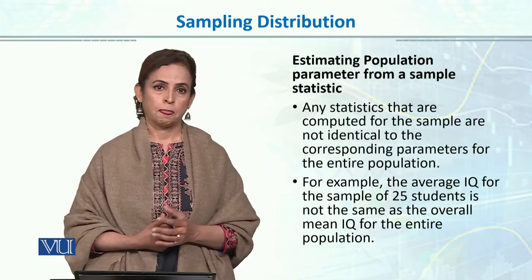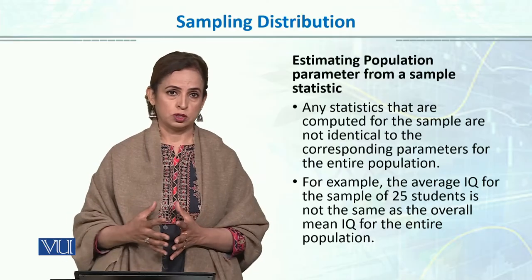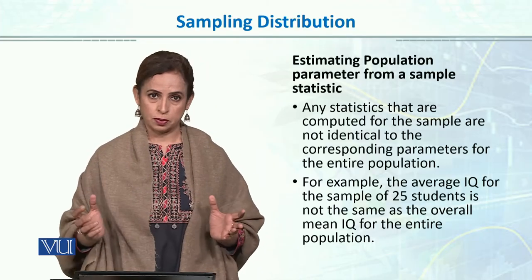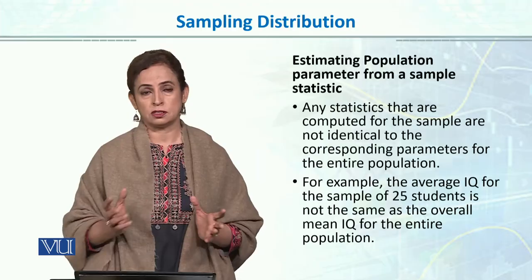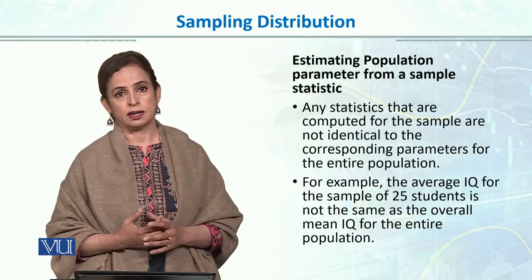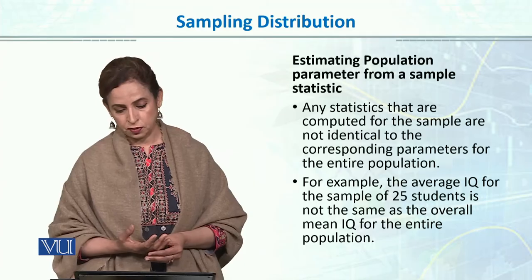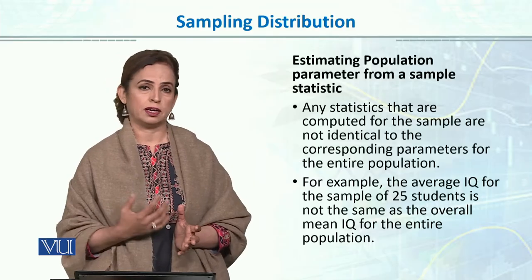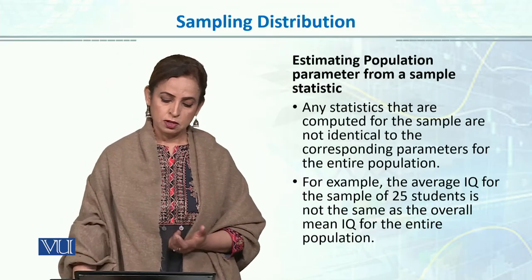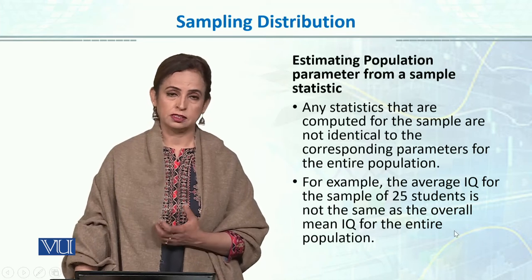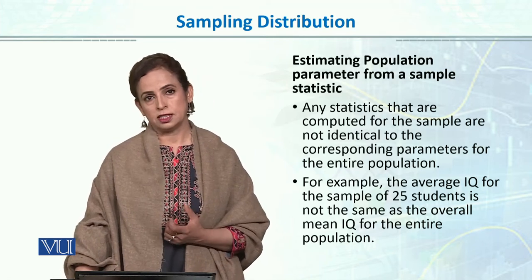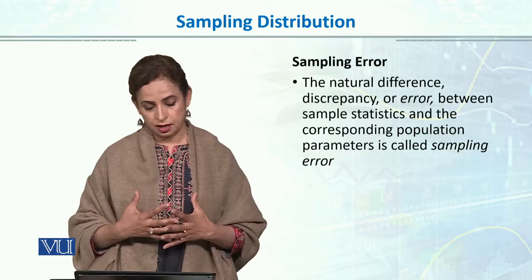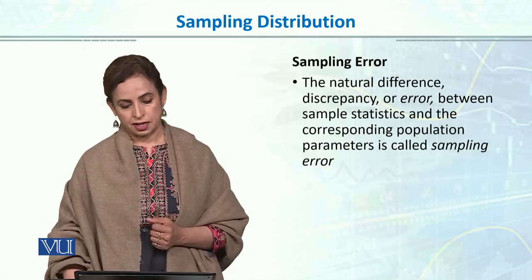I met a researcher from the UK who wanted to study the IQ of the population of Lahore city — a well-defined population where the children are already identified. If the sample mean is 90, the population mean will not be exactly 90; it will likely be a different value. There is always a chance it could be the same, but more likely there will be a difference, and that difference is what we call sampling error.